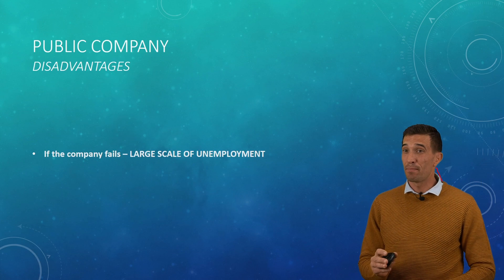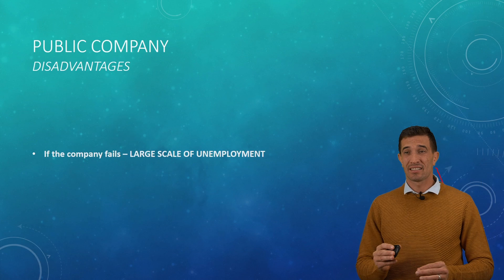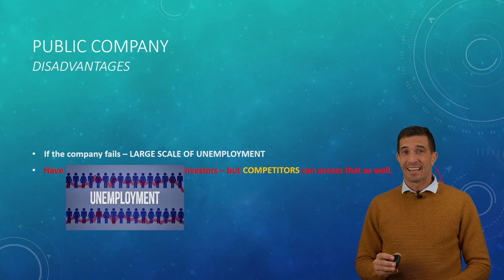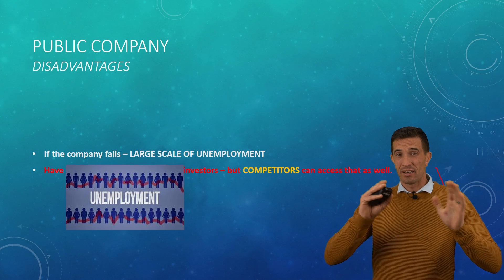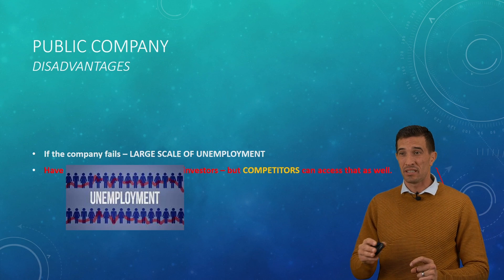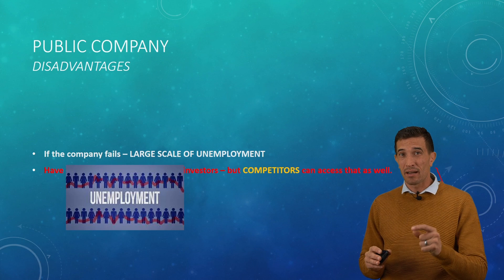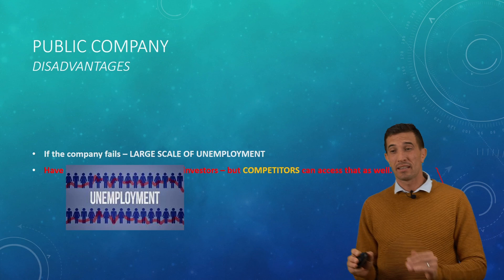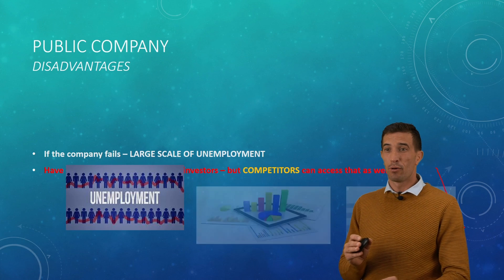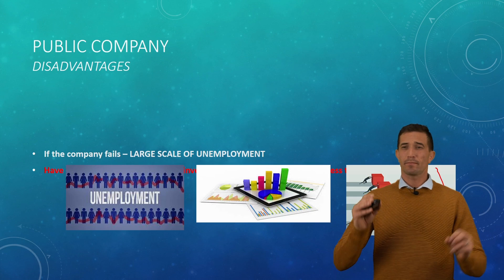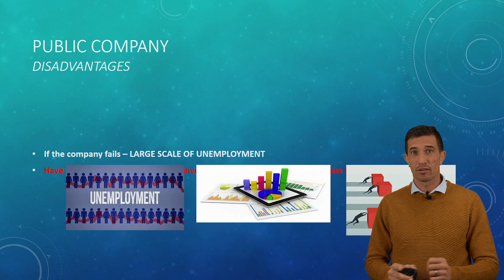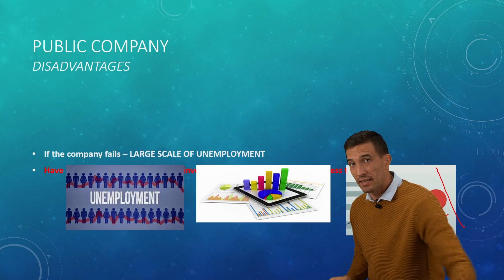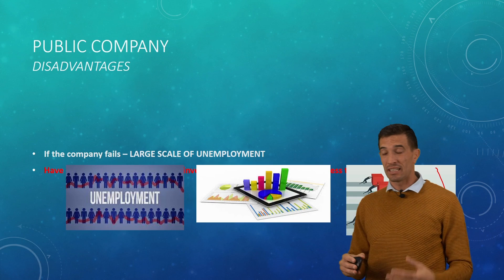Disadvantages: if the company fails, because it's a big company, there's a large scale of unemployment, which is a negative effect and one of our socioeconomic issues. Currently we face a 40% average unemployment rate in our country, which is very bad. Another thing is that because you're a public company and not private, your information is not private anymore — your competitors have access to it. Whatever you publish, your competitors will see as well, because the general public needs to see it if they want to buy and sell shares. That's why you need to make it public.